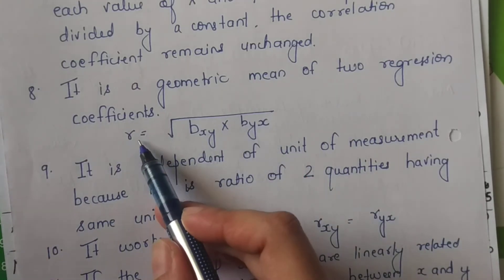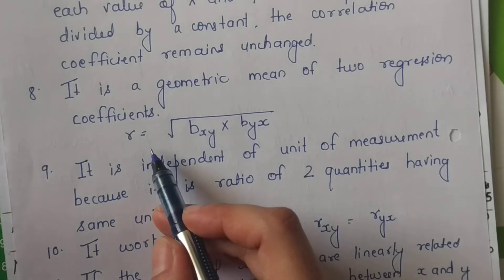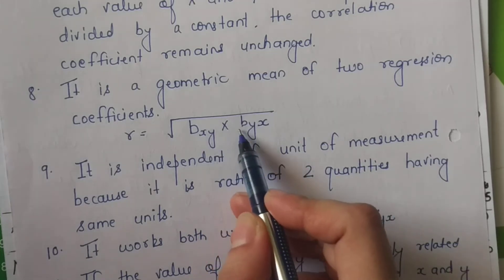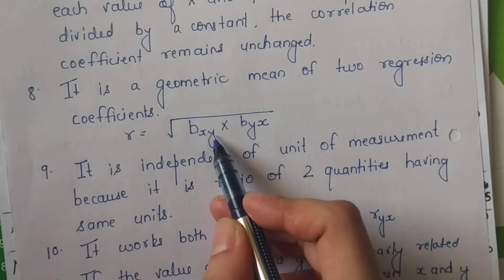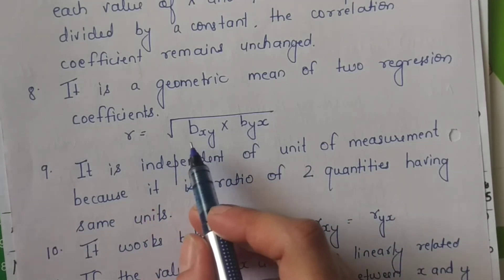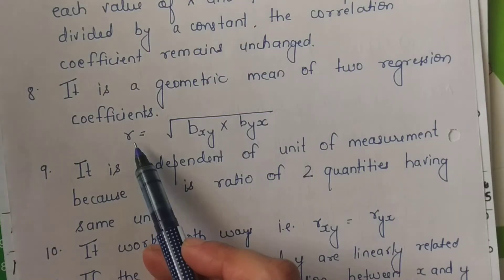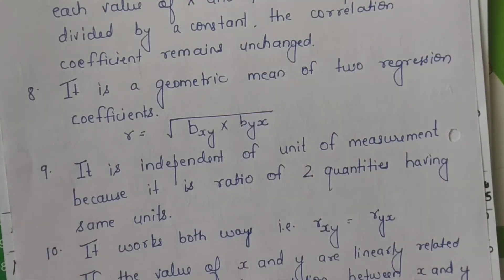Toh hame ghuma fira kar wapis se r hi mil raha hai. So r is also the geometric mean of the regression coefficients. In dono ka geometric mean, x or y ka geometric mean bhi. r ka, agar hum geometric mean karte hain, matlab unko multiply karke uska square root karte hain, toh woh bhi aapka r hi aata hai, correlation coefficient hi aata hai.